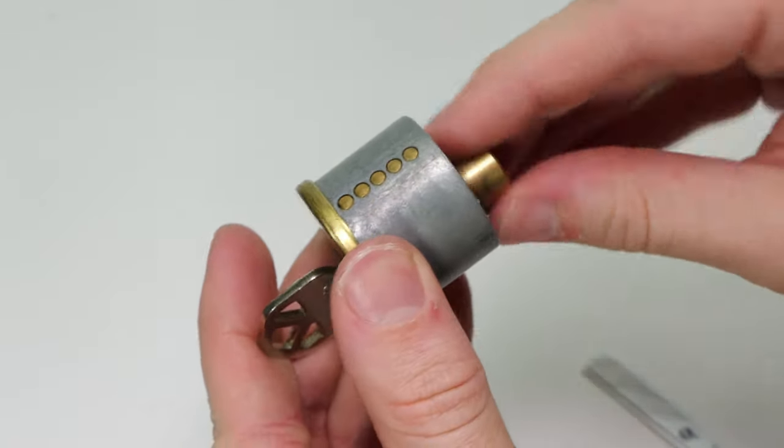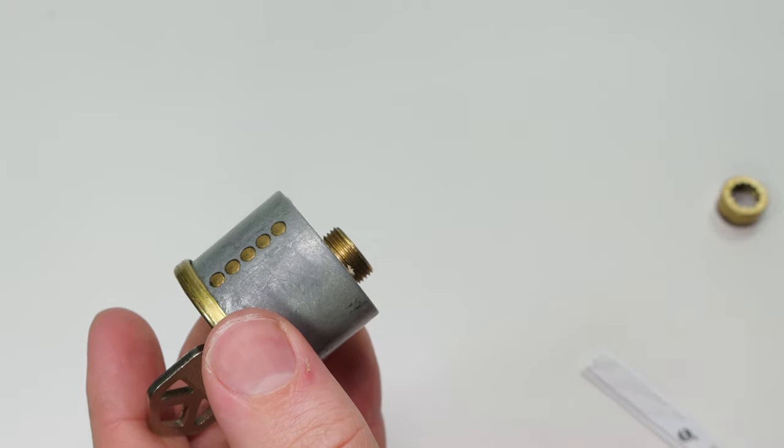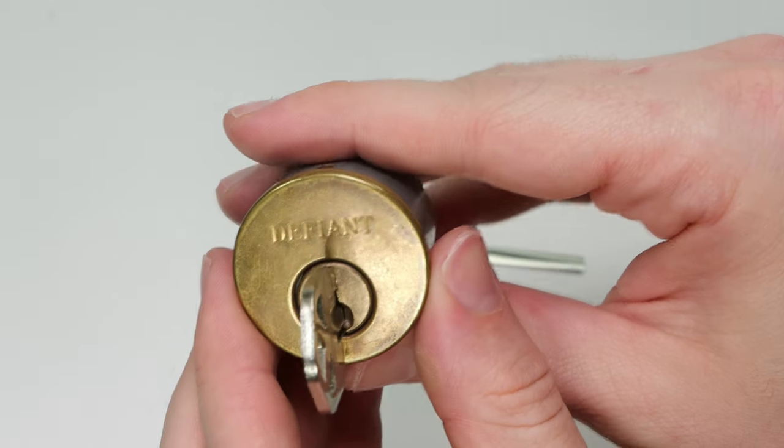Take the back off, insert the shim through the back, and then it makes it so that you can get the lock open without having the key.